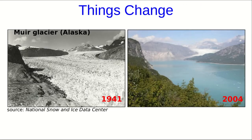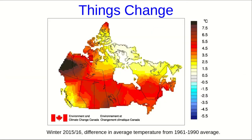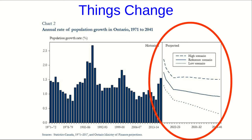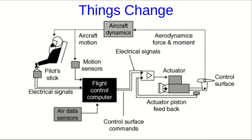Change is all around us. Often we want to quantify change, or explain how and why it happens, especially as scientists and engineers, and often in other professions as well. Sometimes we want to predict change, and other times we want to design devices and processes that control change. So let's start by talking about change.